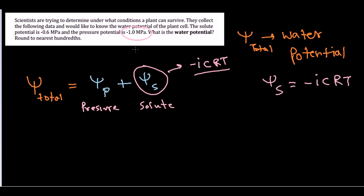The pressure potential value is -0.6 MPa, plus the value for the solute potential is -1.0 MPa. Now we simply add them together: -0.6 minus 1.0, we get -1.6 MPa. That is going to be the water potential value.